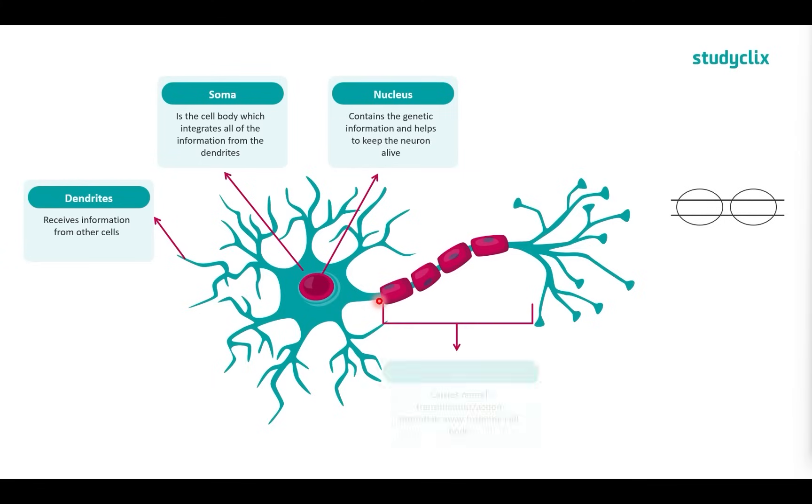So that one long tube is what we call the axon. This carries neurotransmissions, also known as action potentials, away from the cell body. So the action potential is the message that's going down the neuron. It refers to the change in electrical potential. Don't worry about it too much. We don't need the really nitty-gritty details about it.